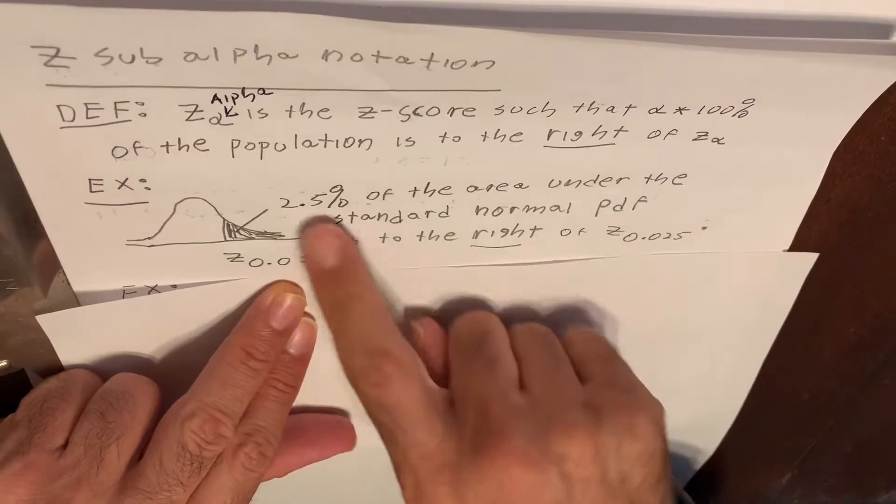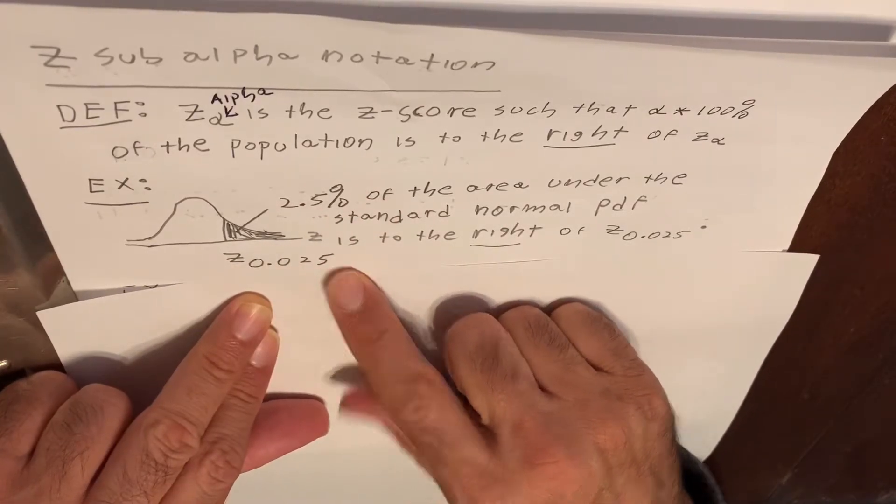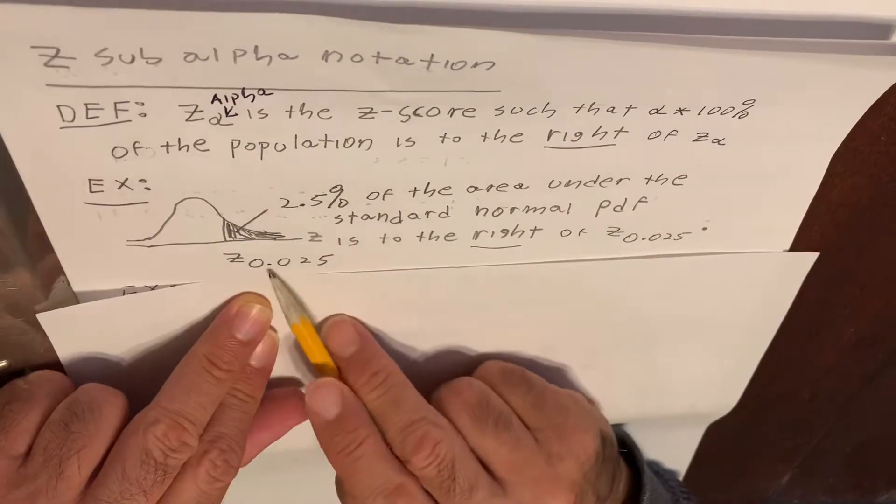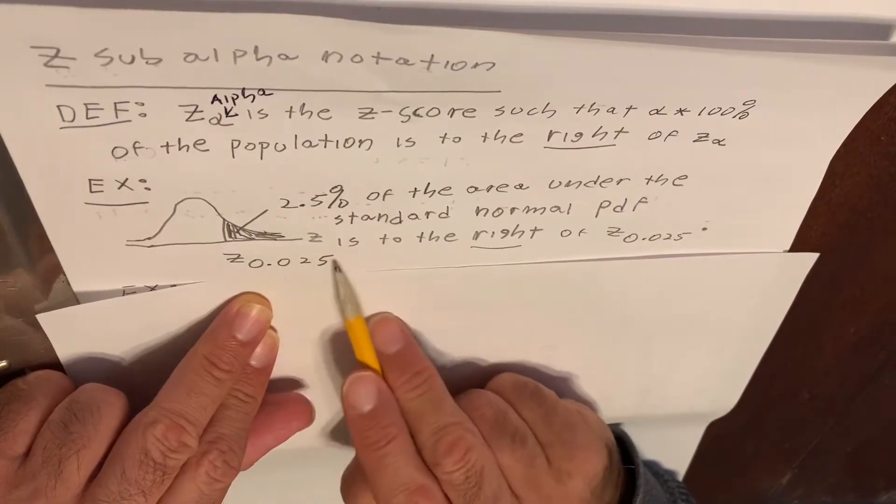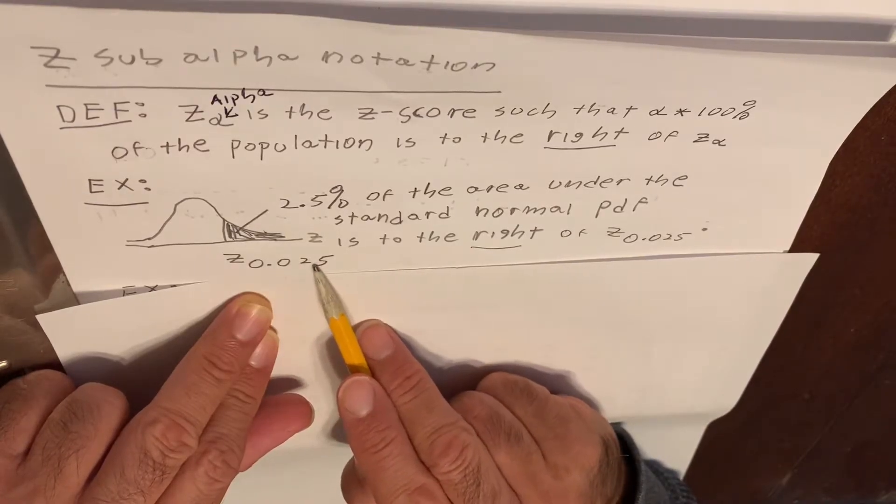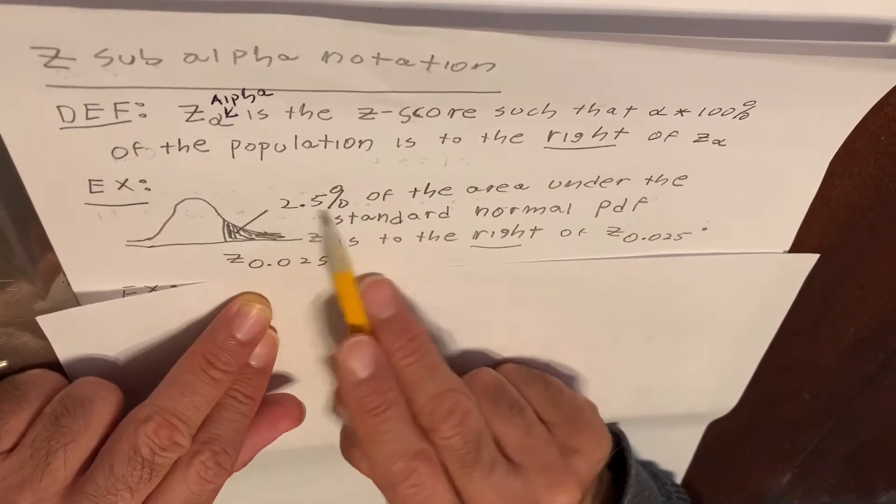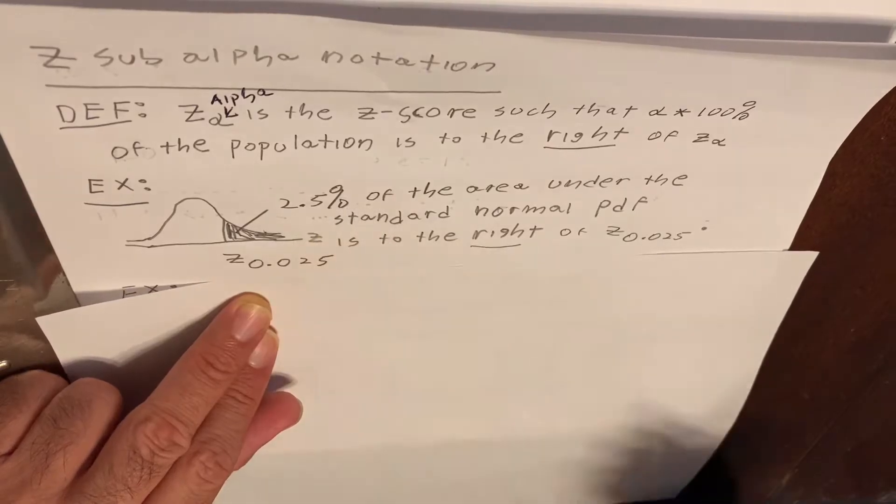The relationship between the 2.5% and the 0.025 is simply that if we convert a decimal to a percentage, we do it by multiplying by 100, which is equivalent to moving the decimal point two places to the right. That's why we have 2.5% of the area to the right.